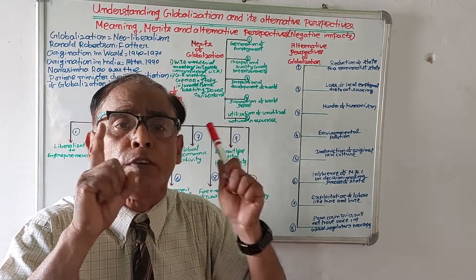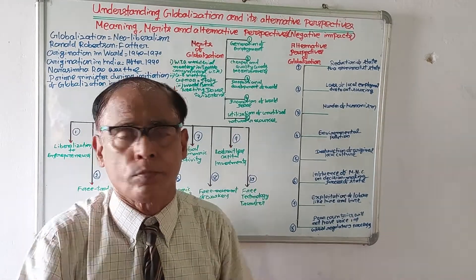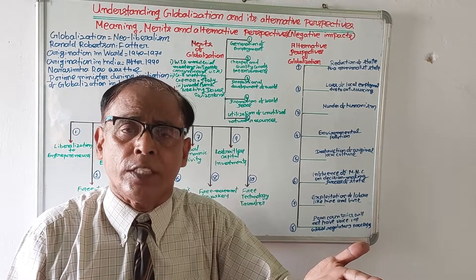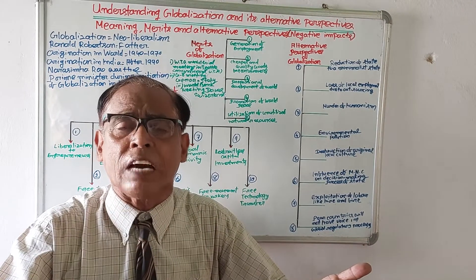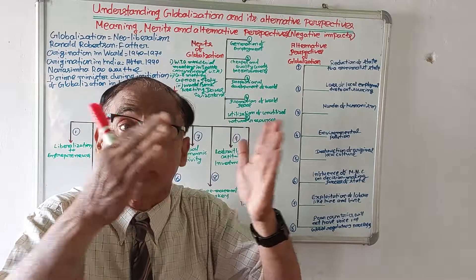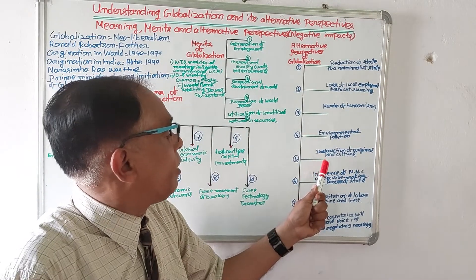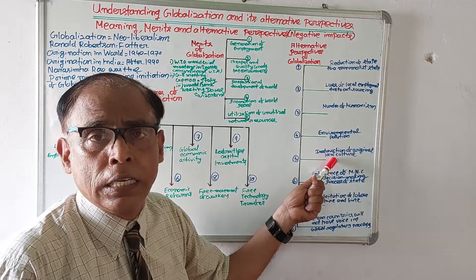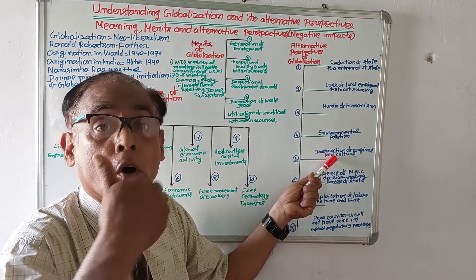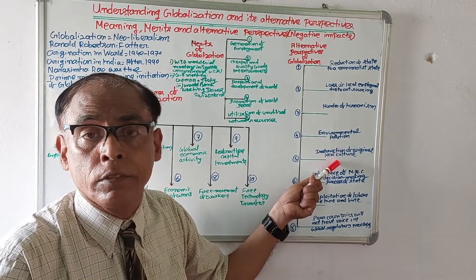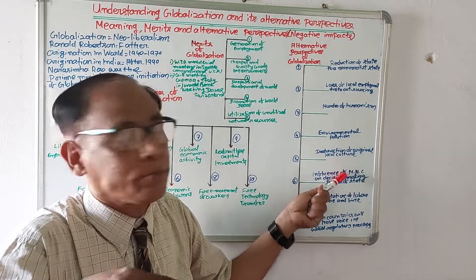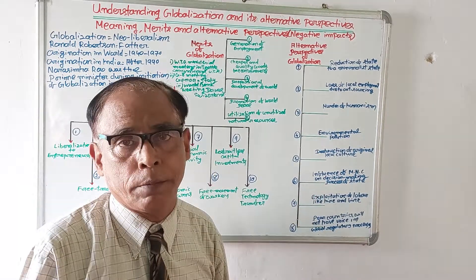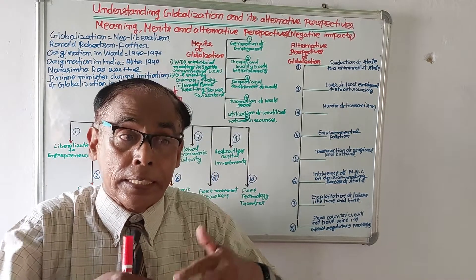Number four: environmental pollution. In globalization, factories will be established on a large scale, so the environment will be polluted. Number five: destruction of original local culture. In globalization, cultures of other nations will enter into other nations, so local culture will be affected and destroyed.